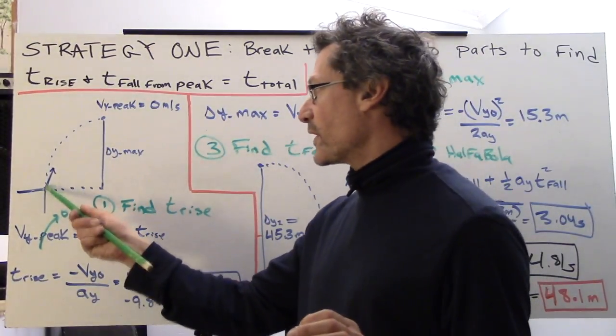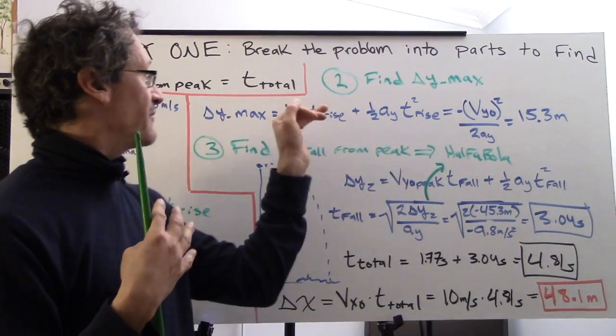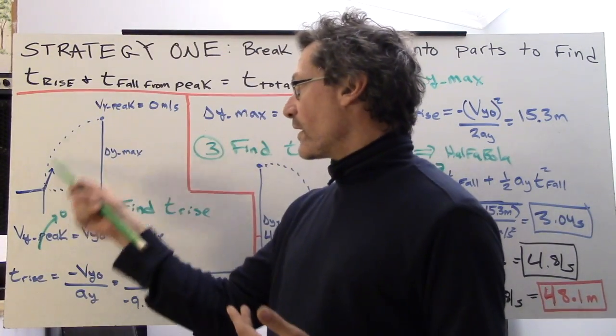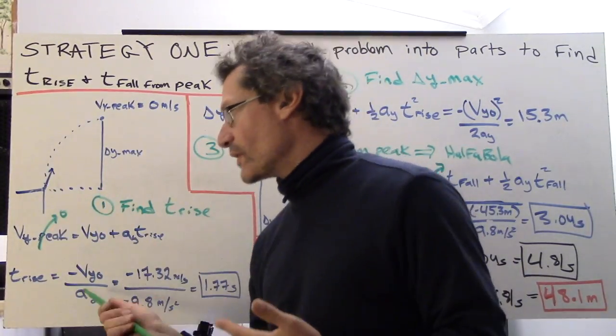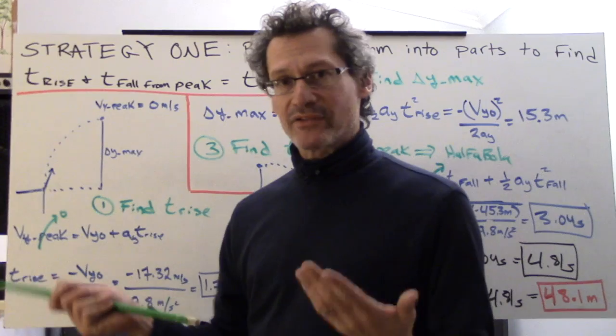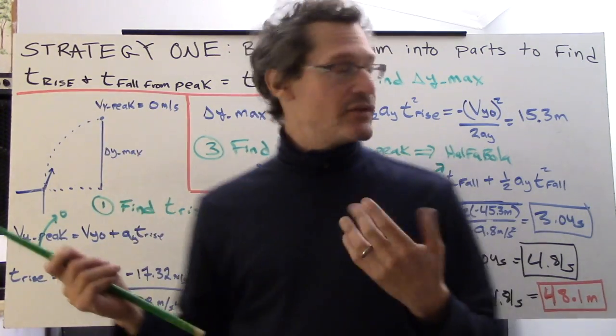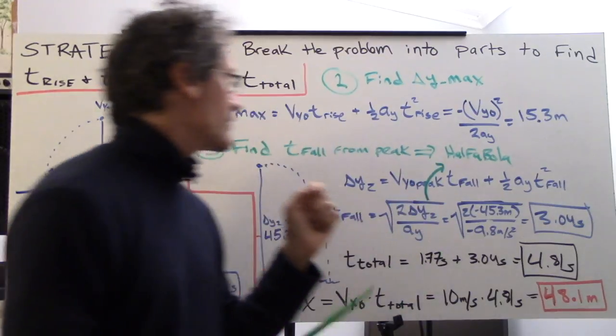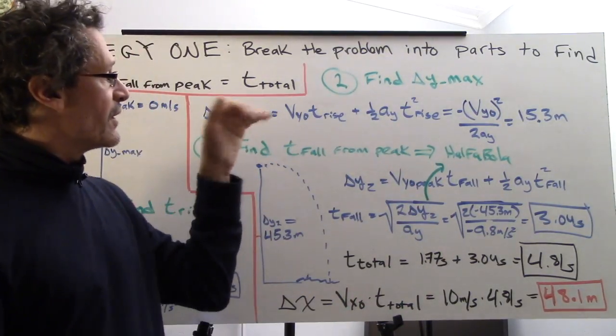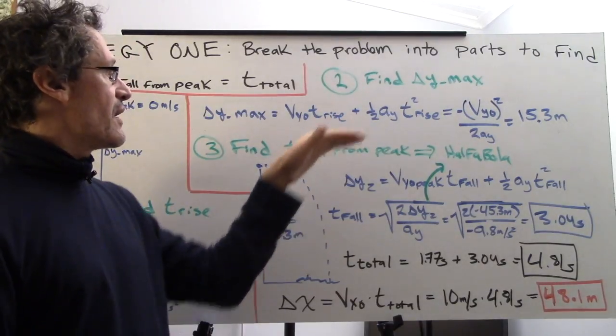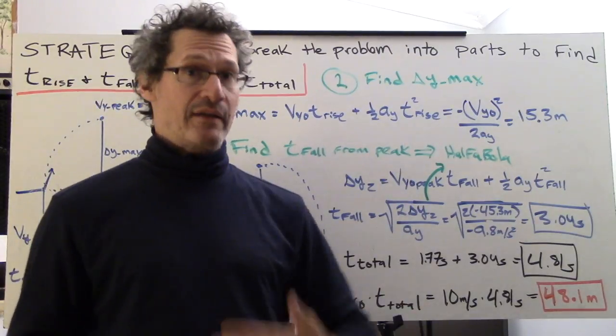The next step is we've got to find delta y max. We need to find out what the height is at the peak so that we can add it to the height of the 30 meters all the way down to the water and figure out the time it takes to fall from that height. There's this interim step to get delta y max.